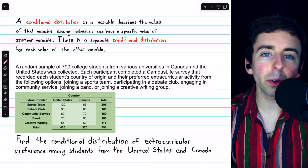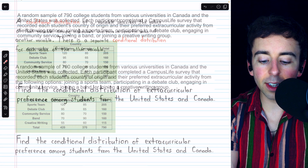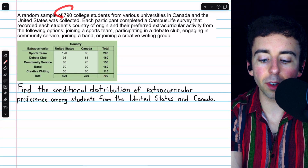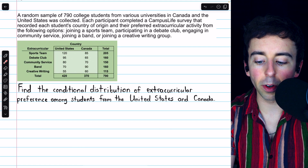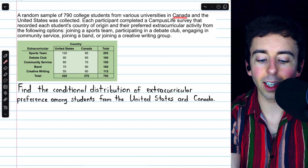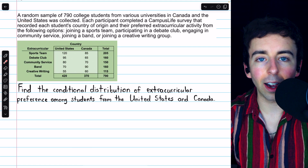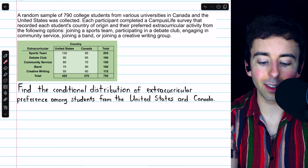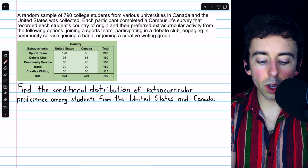Let's go through a couple examples of calculating conditional distributions with percentages. This two-way table summarizes the results of a random sample of 790 college students from universities in Canada and the United States who were asked about their preferred extracurricular activities. We can see the United States choices in one column and the Canadian students' choices in another column.